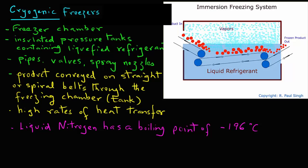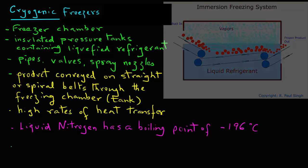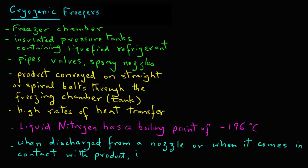It converts from liquid to vapor at that low temperature. So when liquid nitrogen is discharged from a spray nozzle or when it comes in direct contact with the product itself, it boils. The cold vapors are then circulated onto the incoming product.